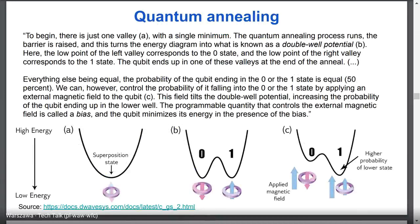How do we do quantum annealing? In practice, we can do it by applying a magnetic field. Initially the qubit is in a superposition state, but after applying the magnetic field we can change the landscape of the energy function. First we achieve what is called a double well potential. In this state, assuming everything else is equal, the probability of the qubit ending in state 0 or state 1 is equal — 50%. However, we can control this probability by applying an external magnetic field. This is how we do computation — we modify the probability of ending up in a given state.